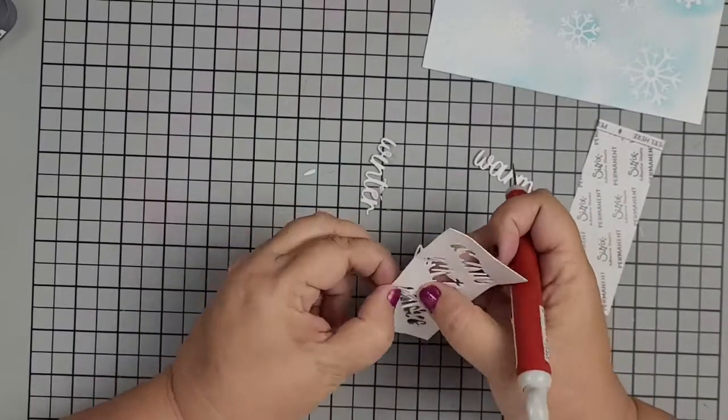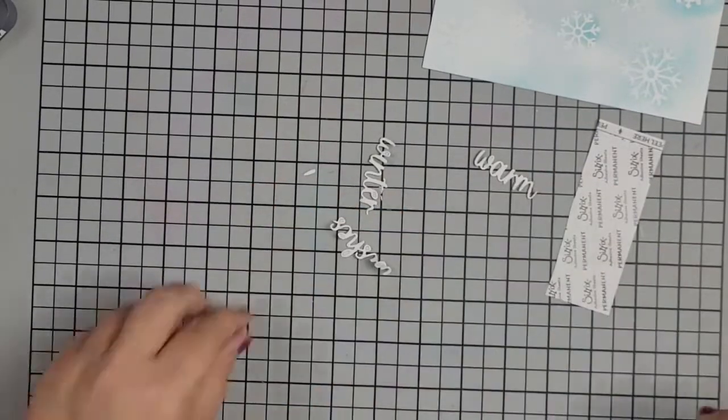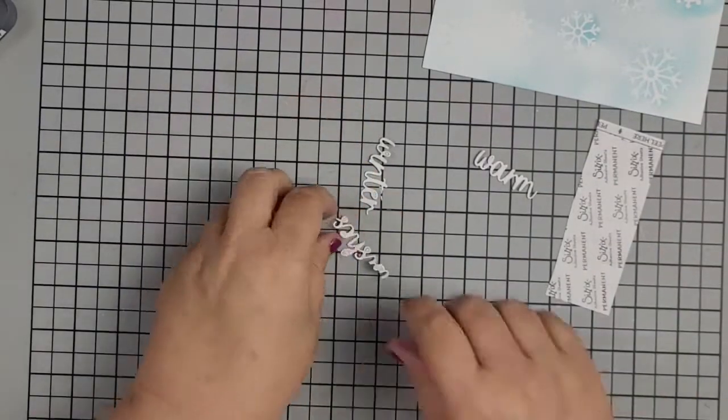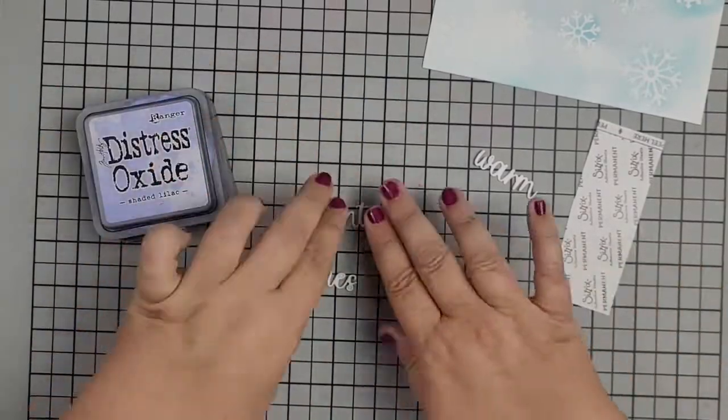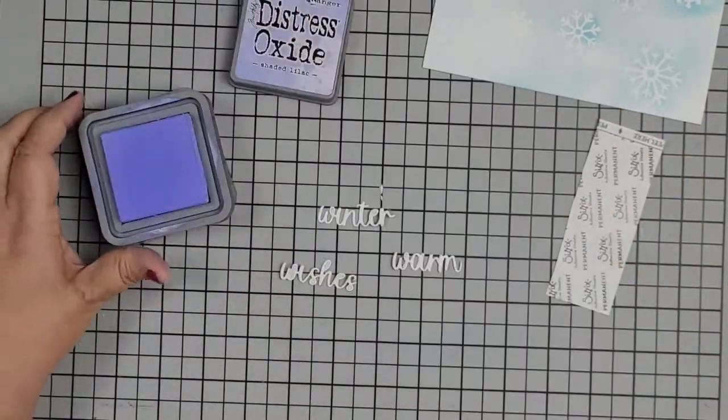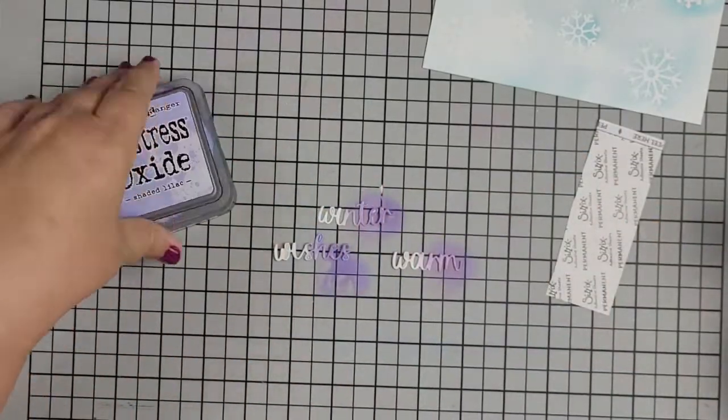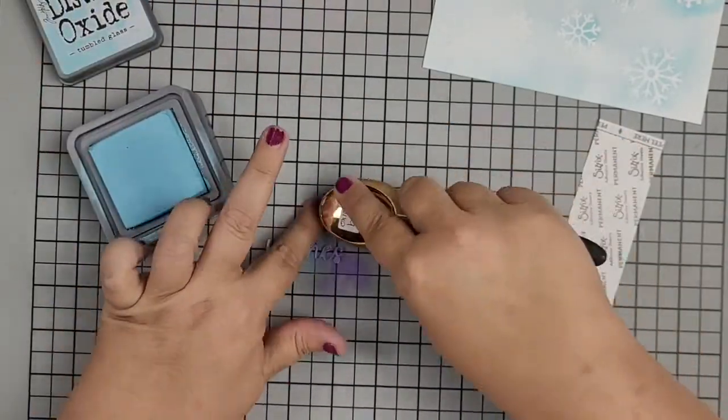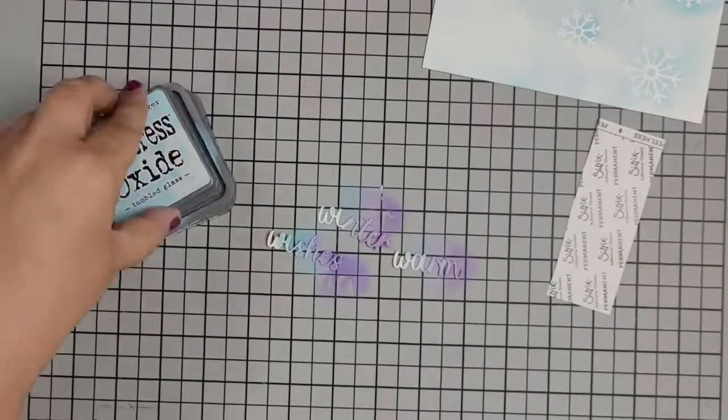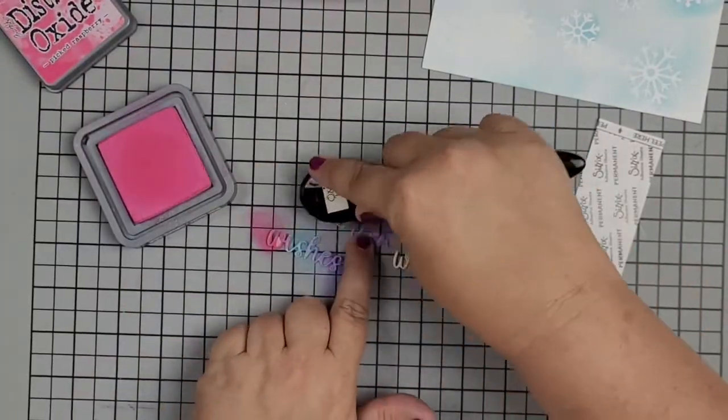So I am working on my silicone craft sheet so that I'm not messing up my desk. And so we're going to fix those words. We're going to bring in some shaded lilac and just go ahead and do my ink blending. There's that tumbled glass making another appearance and now the picked raspberry.